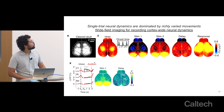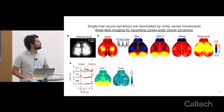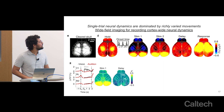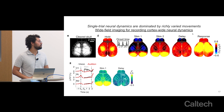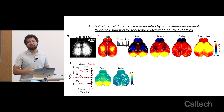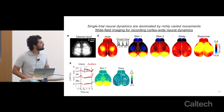Here we show the average cortex-wide activity during different time periods of the task. During the hold period, there's a lot of activity around motor cortex areas. During the stimulus periods in a visual trial, the bulk of activity is around visual cortex. During the delay period activity is more widespread, and in the response period — when the animal receives reward — the great majority of cortical areas light up, which makes sense as reward is a very salient event for the animal.